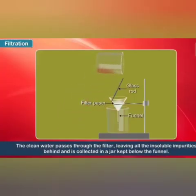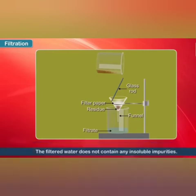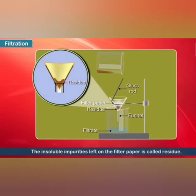The clean water passes through the filter, leaving all the insoluble impurities behind, and is collected in a jar kept below the funnel. The filtered water does not contain any insoluble impurities. The insoluble impurities left on the filter paper are called residue.